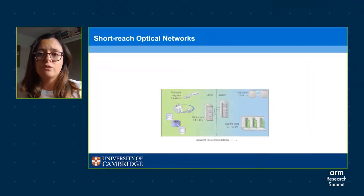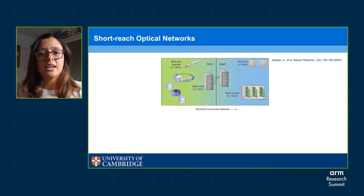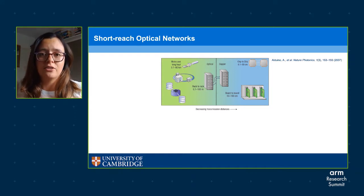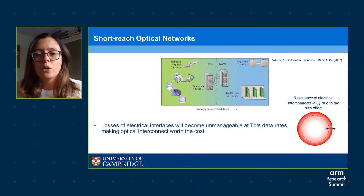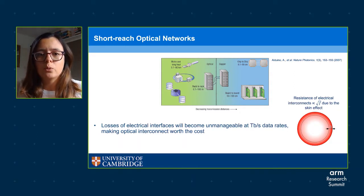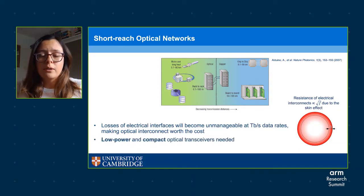This figure shows that the transition from optical to electrical interconnect happens as distances get shorter. Typically short-reach applications like board-to-board or chip-to-chip have stuck with electrical interconnect because the cost and complexity of optical systems is too high. However, as data rates move to terabit per second, the adoption of optical networks is moving to shorter and shorter length scales because of the high resistance and losses of electrical networks at high frequencies. For short reach, optical networks would require low power and compact optical transceivers.